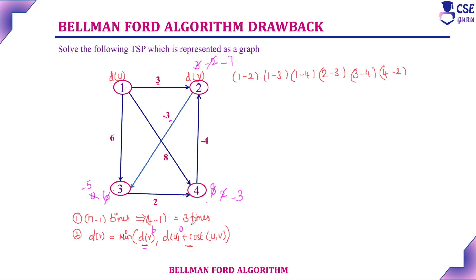Third time relaxing: 1 to 2, distance is 3 — already minus 7 is minimum. 1 to 3, distance is 6 — already minus 5 is minimum. 1 to 4, distance is 8 — already minus 3 is minimum. 2 to 3 — it is minus 7 minus 3, giving minus 10. Minus 10 is minimum. 3 to 4 — it is minus 10 plus 2, giving minus 8. 4 to 2 — it is minus 8 minus 4, giving minus 12. We have now completed third time relaxing the edges.